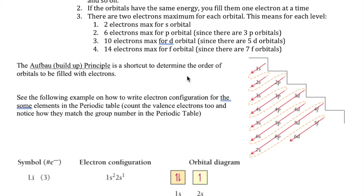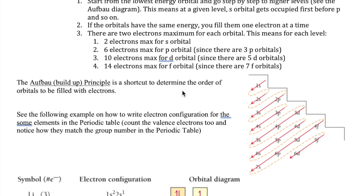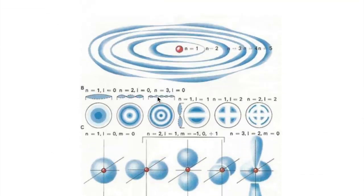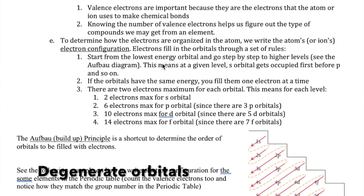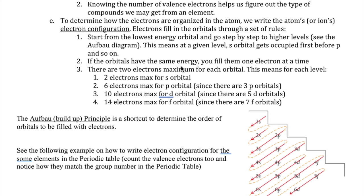The second rule is that some orbitals at the same level have the same energy. For example, the three 2p orbitals all have the same energy — they are called degenerate orbitals. In degenerate orbitals, we must place electrons one at a time before pairing them, to avoid the repulsion that occurs between two electrons that both have negative charges.